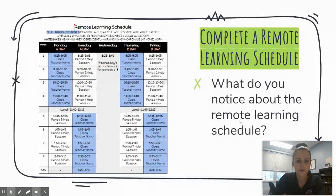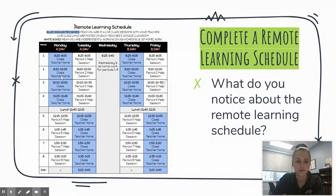The first thing I will point out is that the blue highlighted boxes mean that students are in live class sessions with their teachers. Those are required class times that students will need to be in attendance for, and it does follow their current schedule — periods one, two, three, and four. You can note the time that those start and end on the schedule.